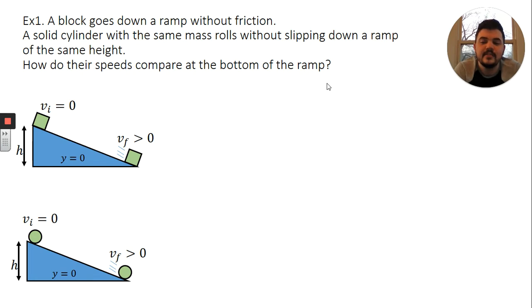Since we only know the heights that the objects are starting at and we don't know the angle of incline or the length of the ramp, we're going to have to use energy conservation to analyze this. Anytime we're using energy conservation, we're going to bring out the LOL diagrams.